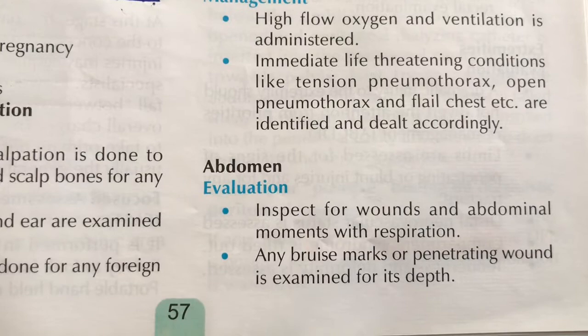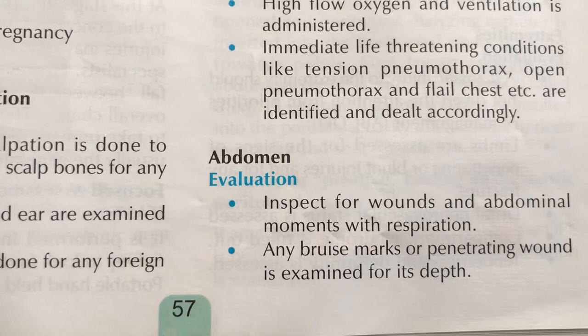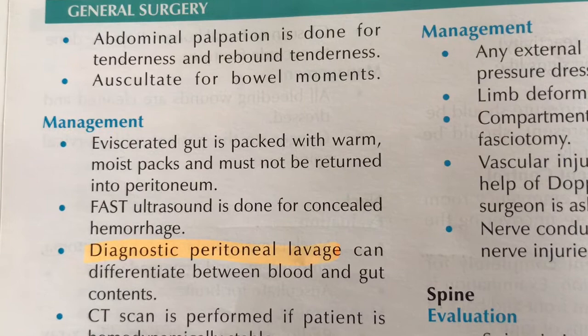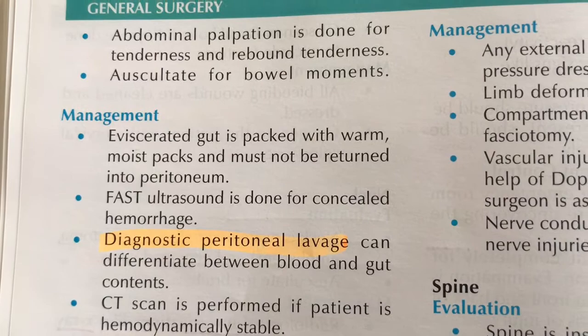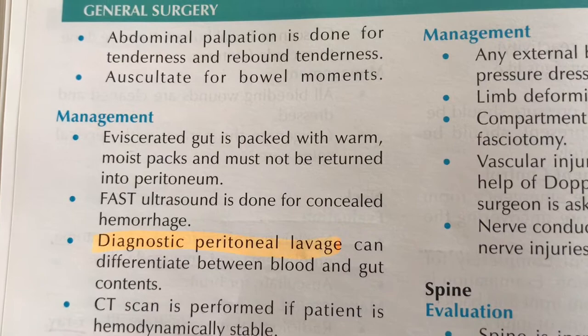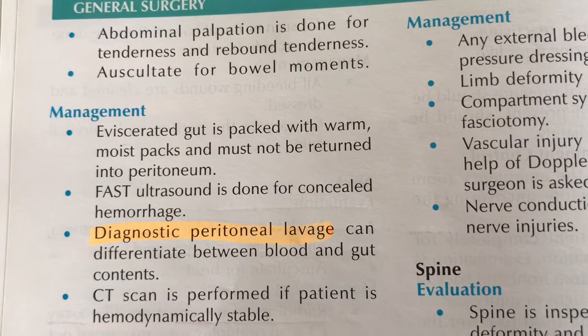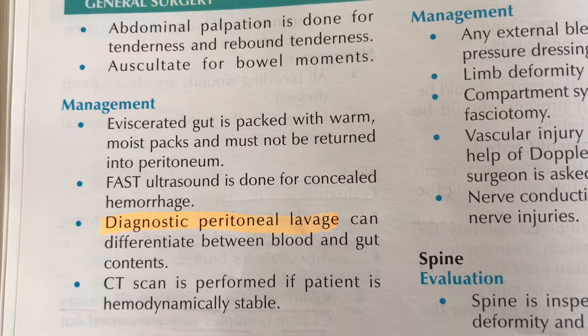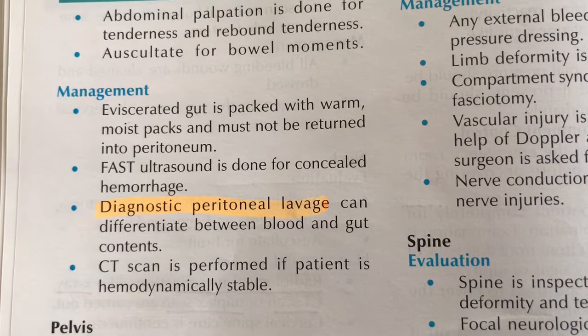For abdominal evaluation, we inspect for abdominal movements with respiration, bruise marks, and penetrating wounds. Deep palpation is key to identify tenderness and rebound tenderness — pressing deeply then releasing suddenly; pain on release is rebound tenderness. We check for bowel sounds. If eviscerated gut is present, we cover it with a warm moist dressing and return it to the peritoneum. FAST ultrasound is performed for concealed hemorrhage; diagnostic peritoneal lavage differentiates blood from gut contents; CT scan is performed if the patient is hemodynamically stable.